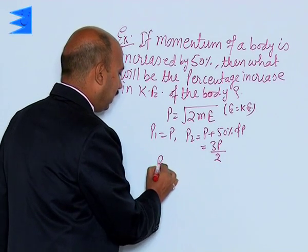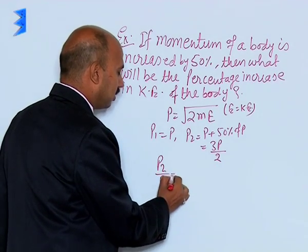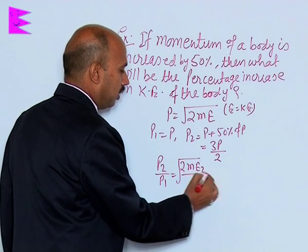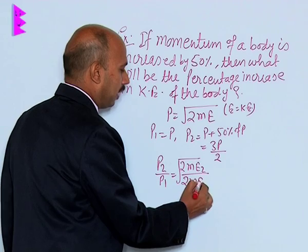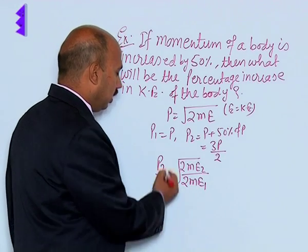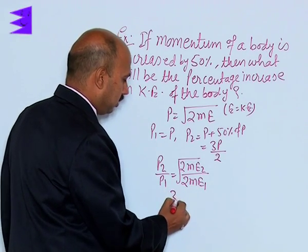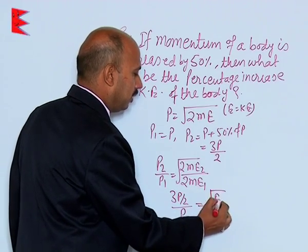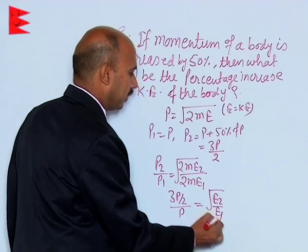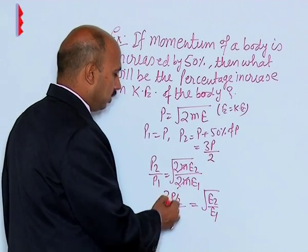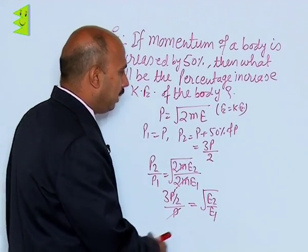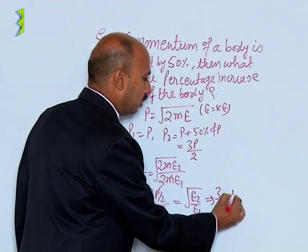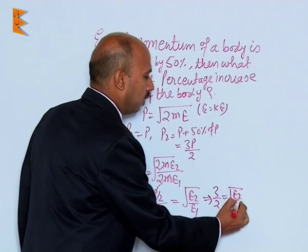Now, we can write P2 upon P1 is equal to under root of twice of m E2 divided by twice of m E1. So, we can write here 3P upon 2 divided by P is equal to under root of E2 upon E1. This cancels, so P cancels. So, you will be getting here 3 by 2 equal to under root of E2 upon E1.